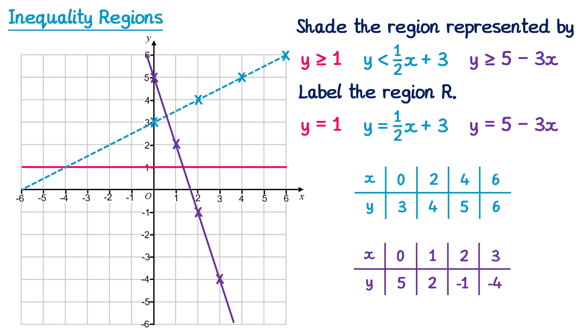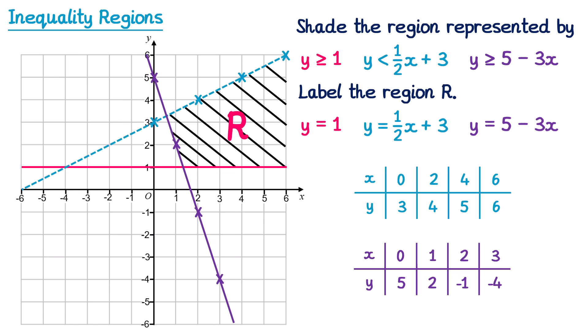Now we identify the region. For y ≥ 1 we need to be above the red line — red arrow going up. For y < ½x + 3 we need to be below the blue line — blue arrow going down. For y ≥ 5 − 3x we need to be above the purple line. The region where all of these hold is identified. Note it's not always going to be a triangle. In an exam you may just use clear straight-line markings to identify the region rather than shading the whole thing.